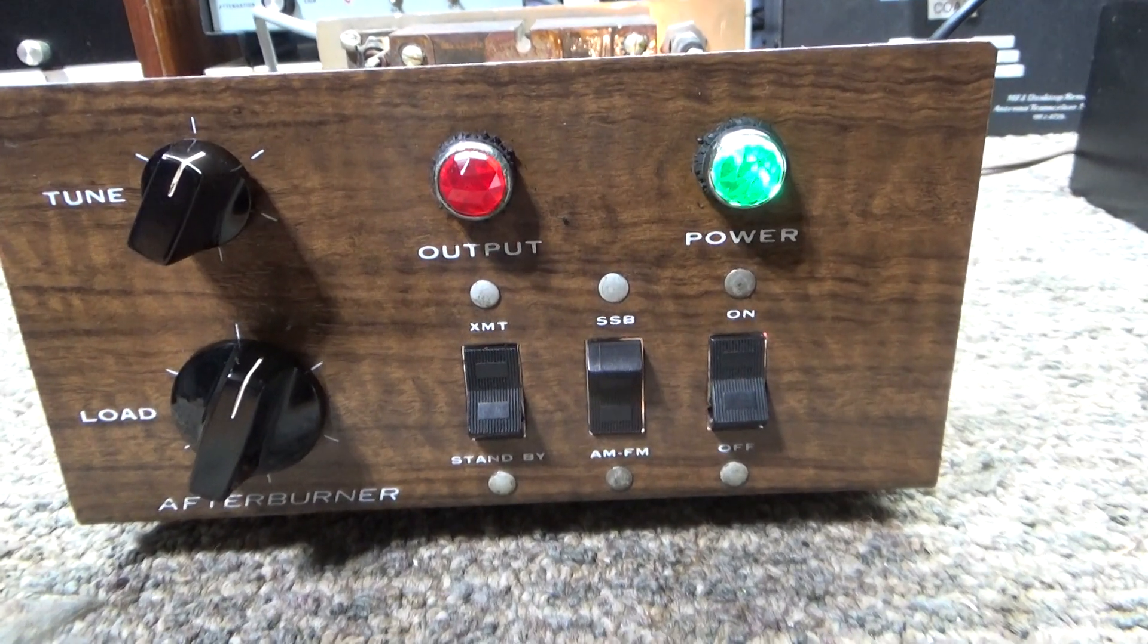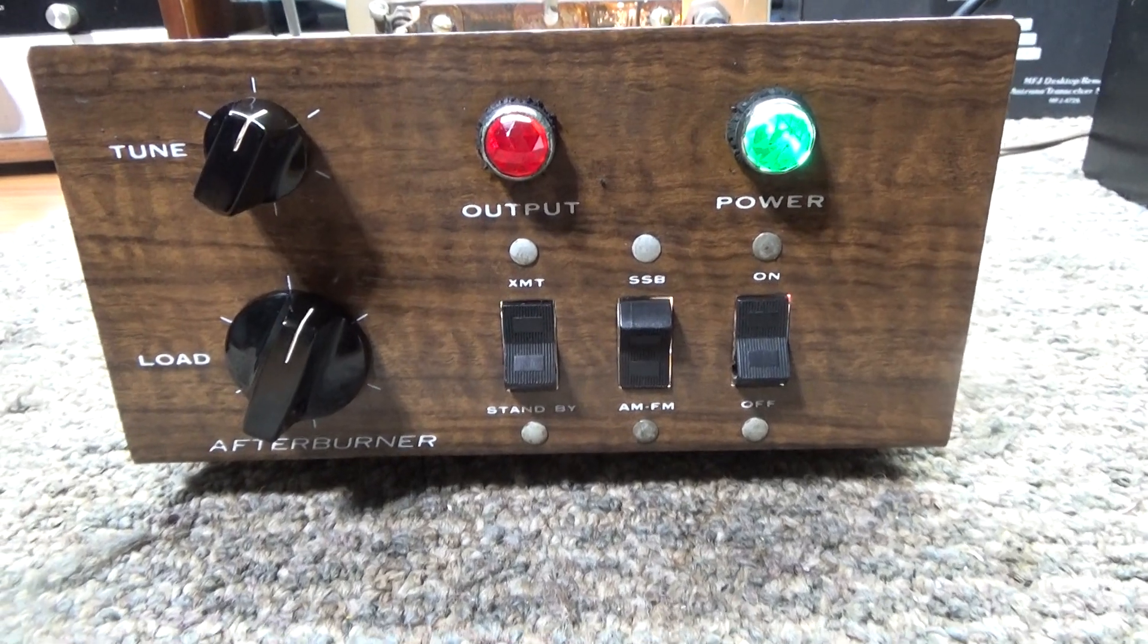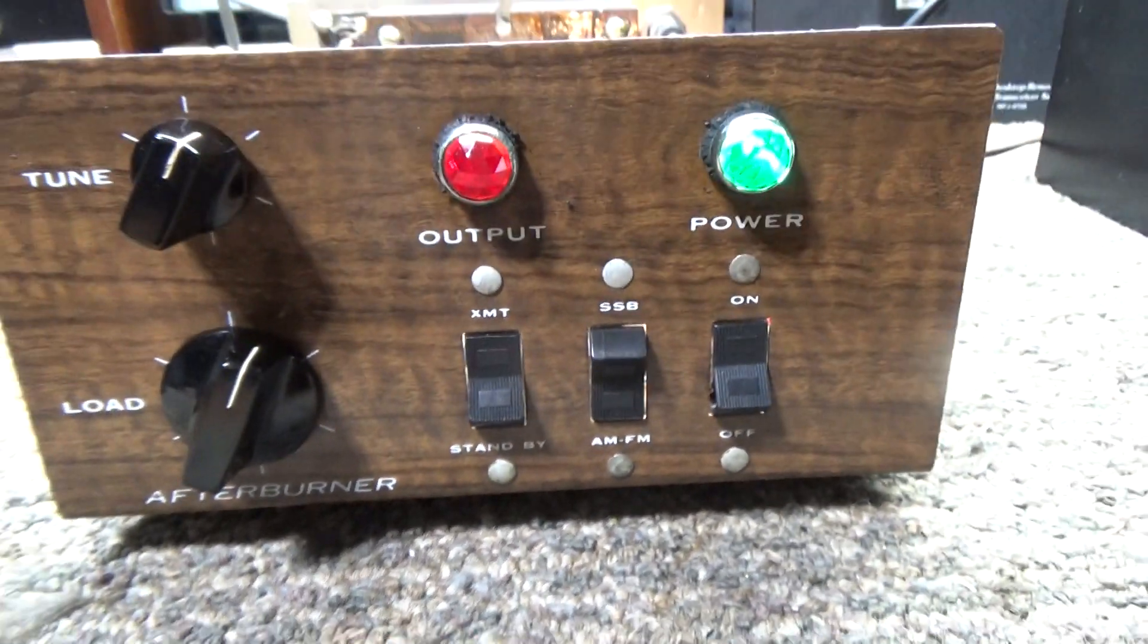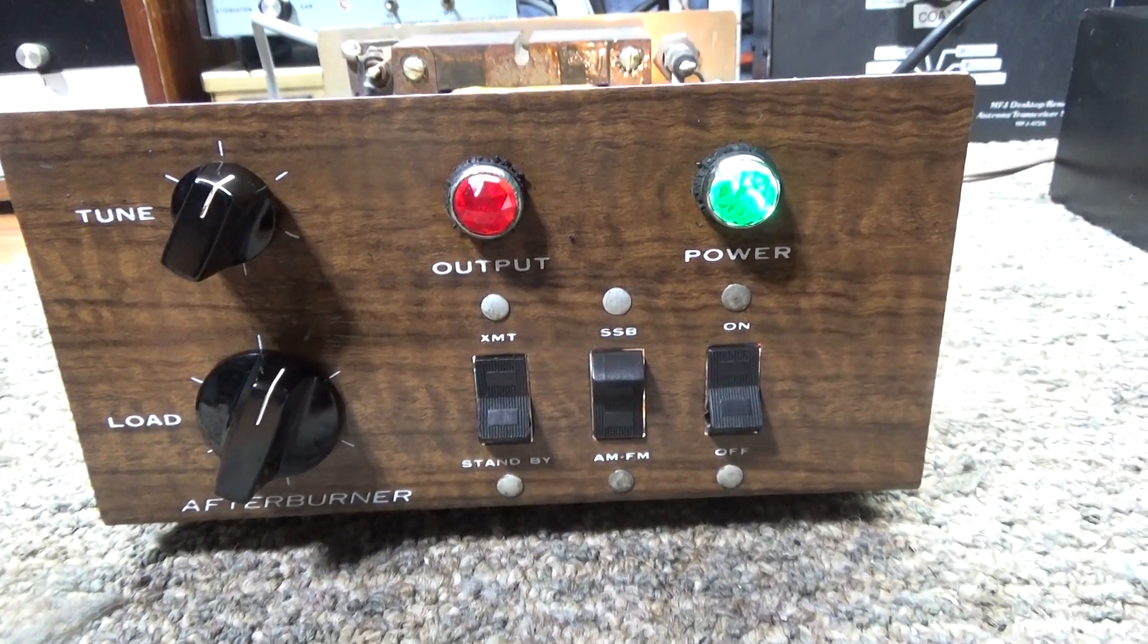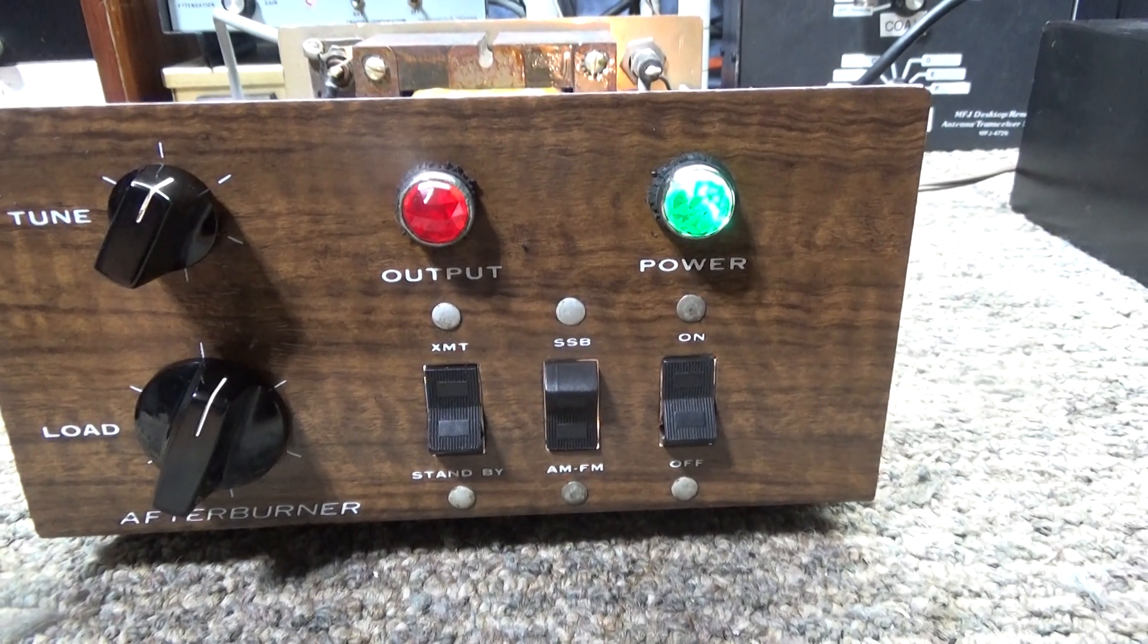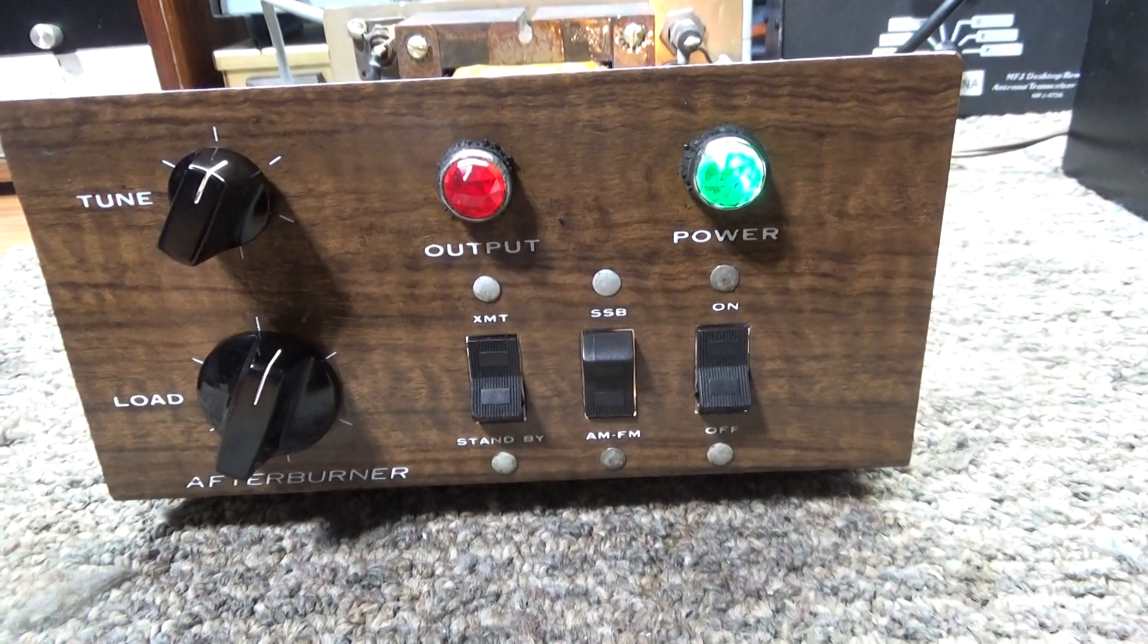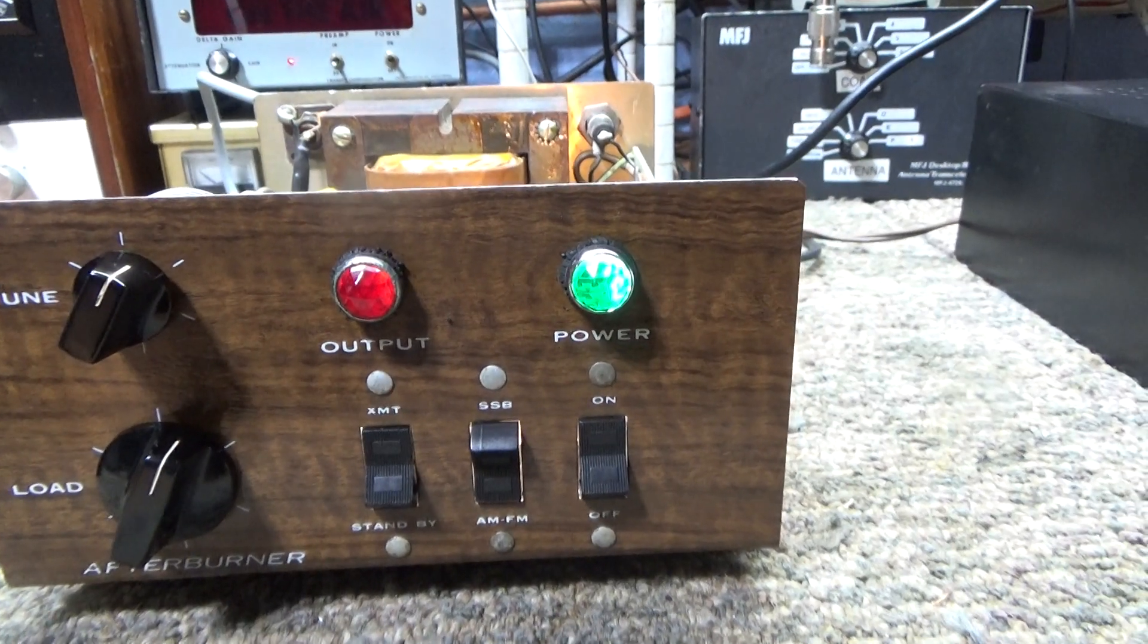Okay, another one I picked up from a local seller. This is a high gain afterburner model 403. I think this is the first one, the earliest version, but I did a little research and looked up the high gain models. CB tricks has a lot of schematics on these guys and some manuals.